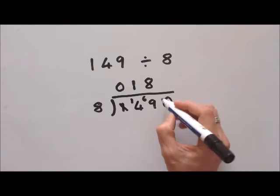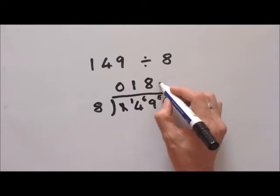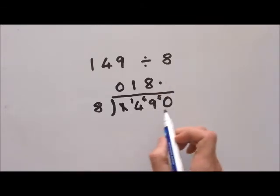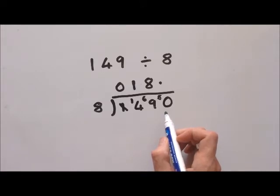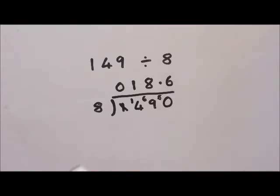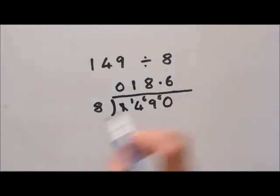The remainder is five — sixty-four, sixty-five, sixty-six, sixty-seven, sixty-eight, sixty-nine — so remainder five. We put a zero here, then a decimal point, and bring down to make fifty. How many eights can we get out of fifty? Five times eight is forty, six times eight is forty-eight, so that's six with a remainder of two.